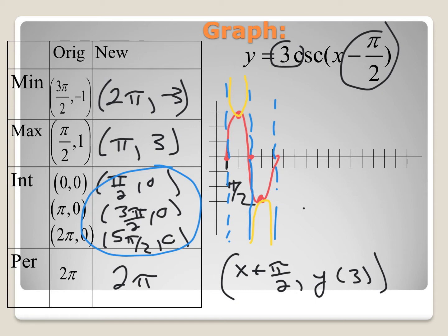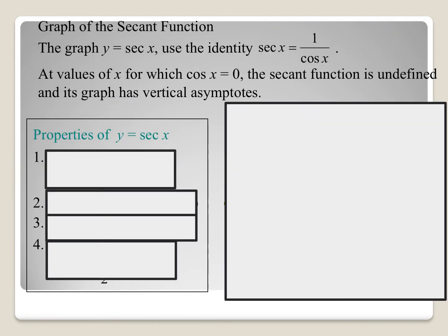To recap: to graph the cosecant, graph the sine function first, draw vertical asymptotes at the intercepts, then sketch the parabola shape for cosecant between the asymptotes, connecting to the minimum or maximum of the sine function. For the secant function, we approach it the same way, using the reciprocal identity that secant equals 1 over cosine. Any x value where cosine equals 0 gives us a vertical asymptote for the secant function.